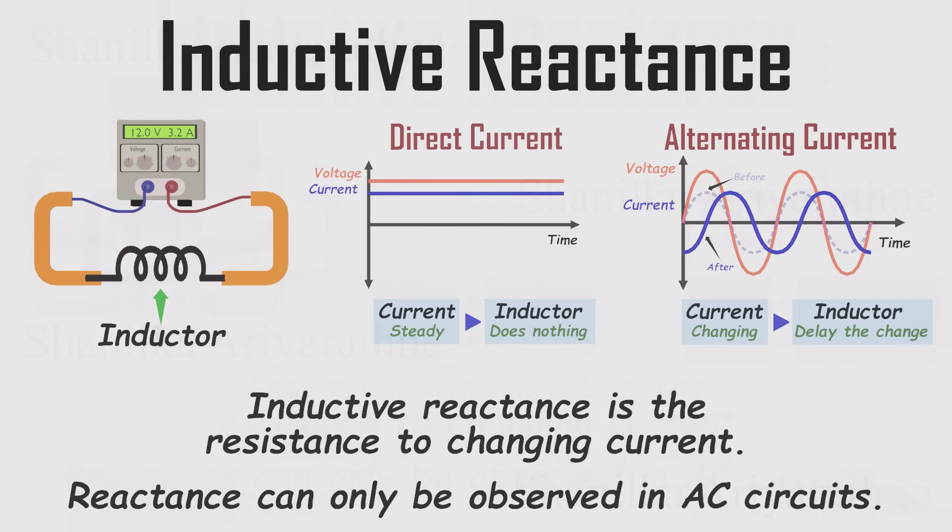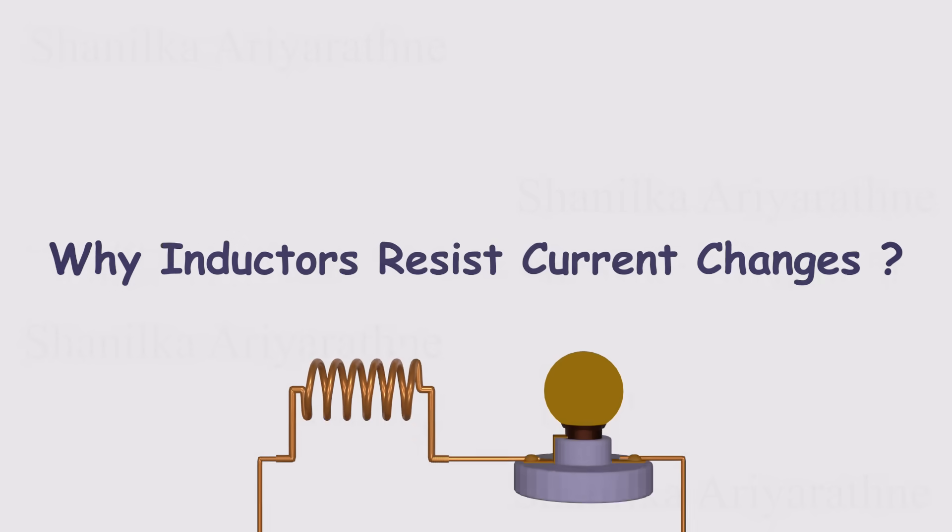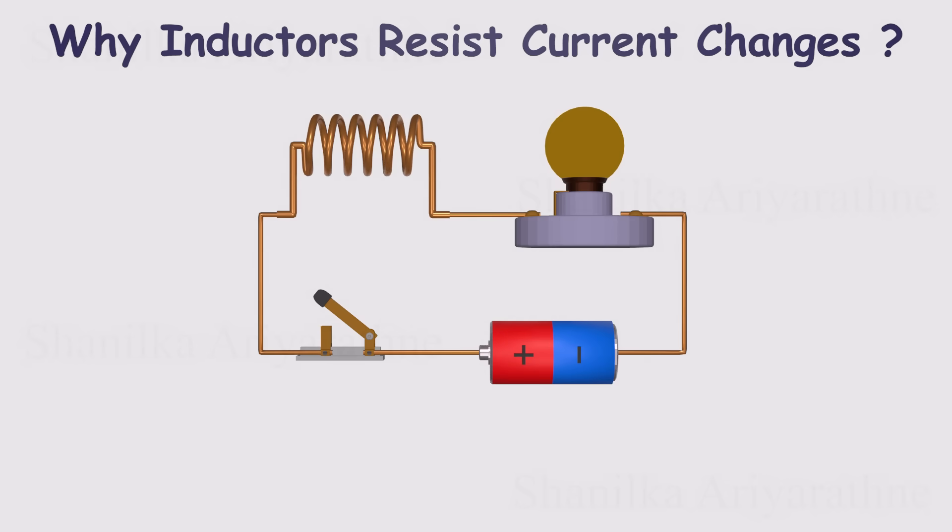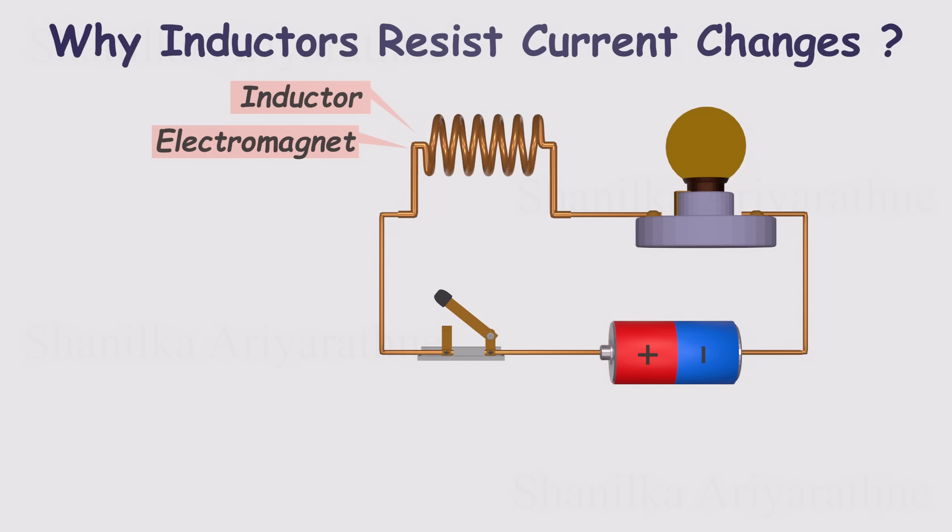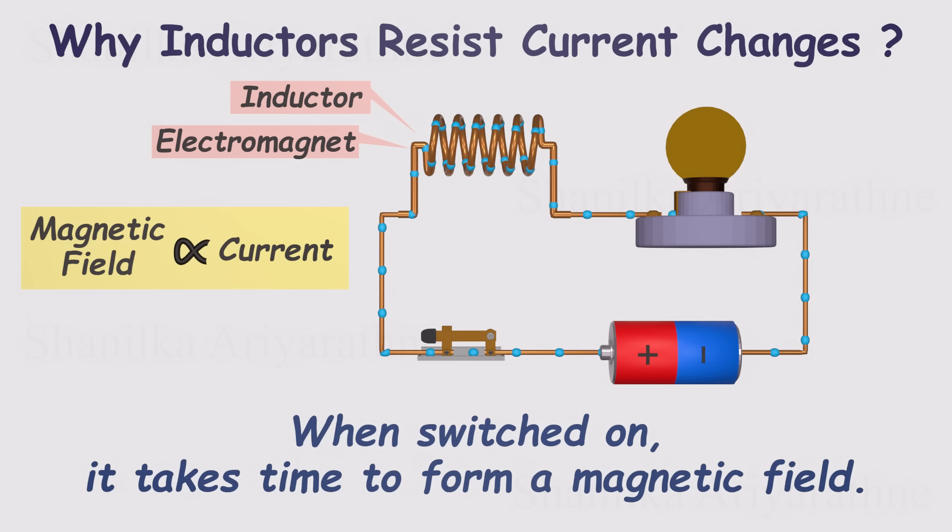By now, you should have a good sense of what inductors are and what they do. They simply oppose the current changes in a circuit. But let's dig deeper and ask, why does an inductor oppose changes in current? As we've already said, an inductor is basically an electromagnet. And for any electromagnet, its magnetic field is directly proportional to the current flowing through it. When we first switch it on, the inductor needs energy to build up that magnetic field. At the very beginning, the field is zero. So the applied voltage drops entirely across the inductor. As the field grows, the inductor stores more and more energy. And at the same time, the current through it gradually rises.